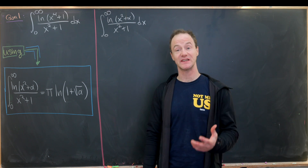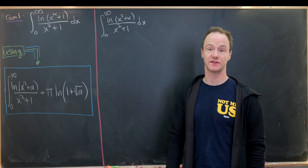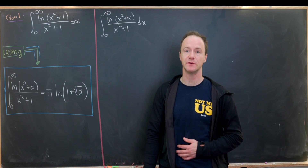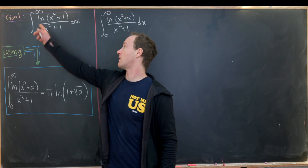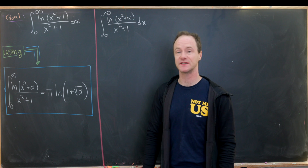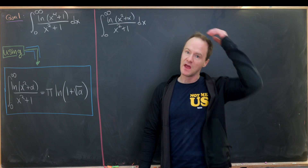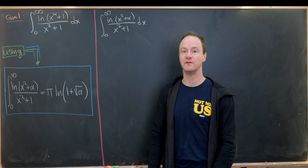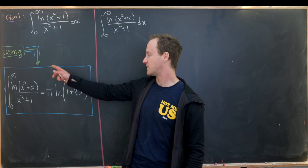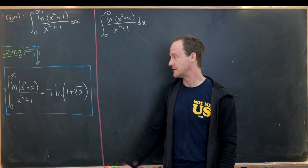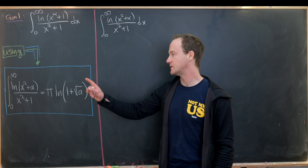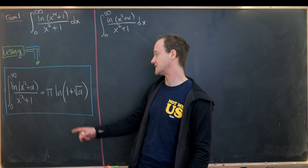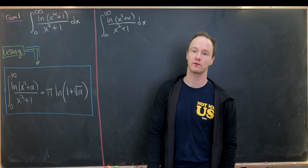Here I've got a nice integral suggested to me by the integral suggester. Our final goal is to find the integral from zero to infinity of the log of (x⁴ + 1) over (x² + 1). We're going to develop a pretty strong tool to evaluate this quite easily, and that's the following integral identity: the integral from zero to infinity of the natural log of (x² + α) over (x² + 1) equals π times the natural log of 1 plus the square root of α.